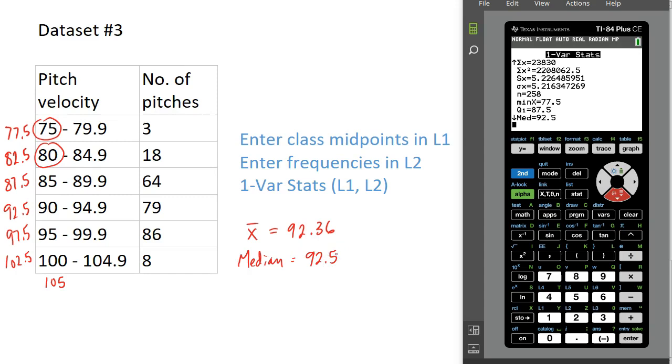Because we don't have the velocity of every single pitch, it is not possible for us to find the mode. In fact, chances are if we measure the velocity with enough precision, there won't be any two pitches with exactly the same velocity. So if we look at it that way, there probably isn't a mode.